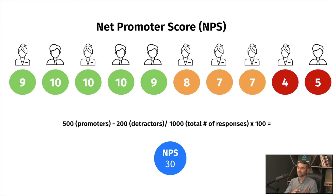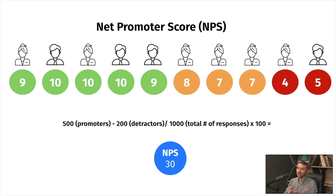You have people which are neutrals, the ones that give you 7 or 8, and you will have detractors, the ones that give you any rating from 0 to 6, inclusive. And the calculation behind the NPS is pretty simple: you take into account only the percentage of the promoters minus the percentage of the detractors.